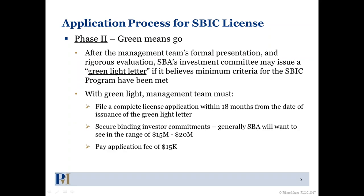In phase two, after the investment fund's management team has gone in for their formal interview, there is a rigorous evaluation process at the SBA. If the investment committee believes minimum criteria have been met, they will issue what is known as a green light letter to the management team. With the green light letter, the management team has 18 months from the date of issuance to finish its formal application, gather all exhibits, and submit to the SBA. At the same time, the management team is going out and trying to get commitments from investors for the fund.